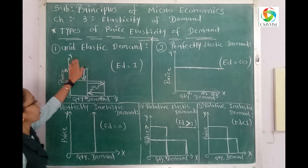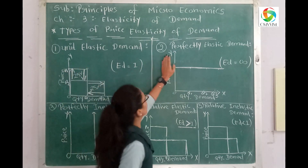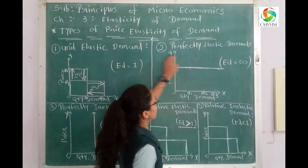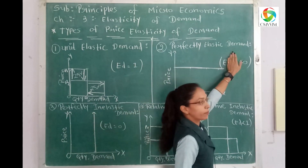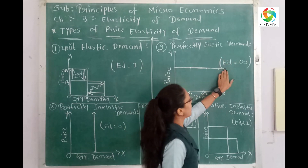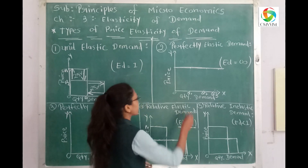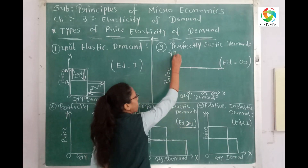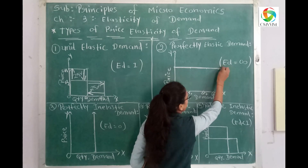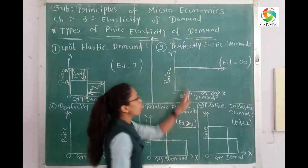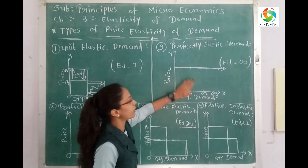Now we will take the second type: perfectly elastic demand. Here the elasticity of demand is infinite. It means the price of the product remains stable — there is no change in price. The demand curve is parallel to the base line.